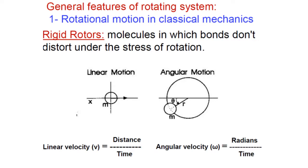From a classical mechanics viewpoint, we consider that molecules are rigid rotors. The rigid rotor concept is an assumption where we assume that in a molecule the bond does not distort under rotation. Suppose I am rotating the molecule but the bond length should not change during that rotation. If R, the internuclear distance, does not change during rotation, we call it a rigid rotor.